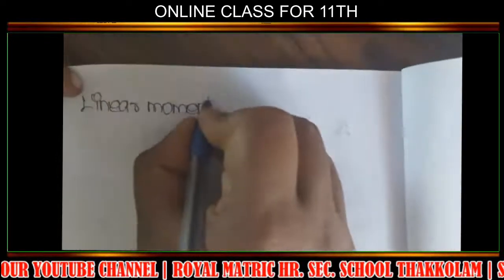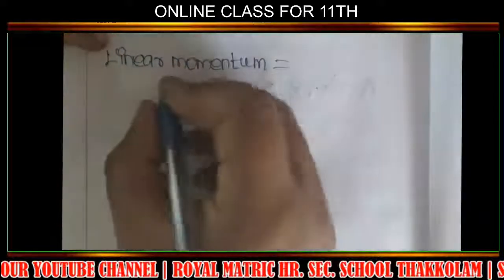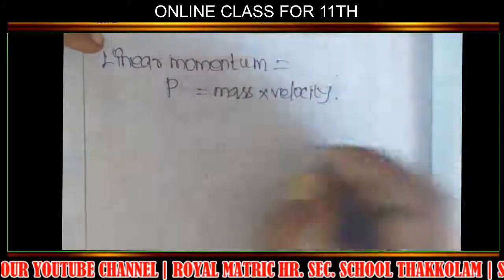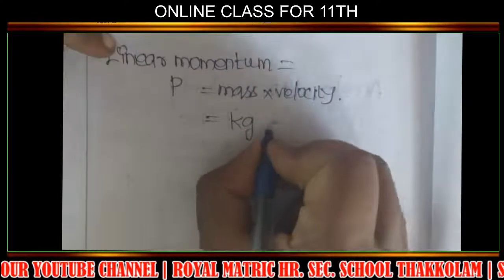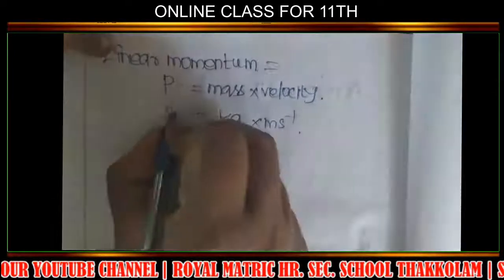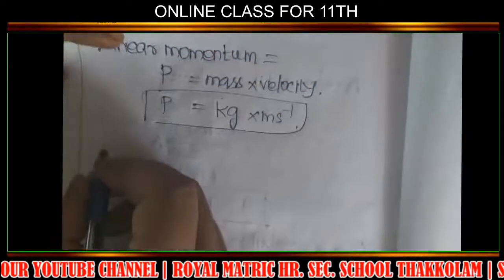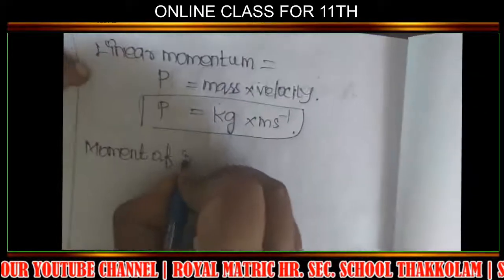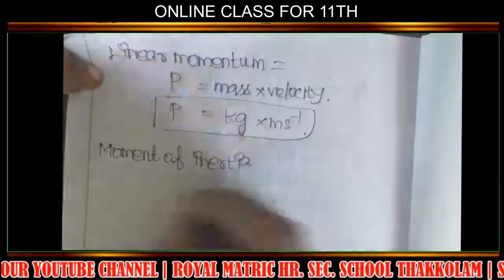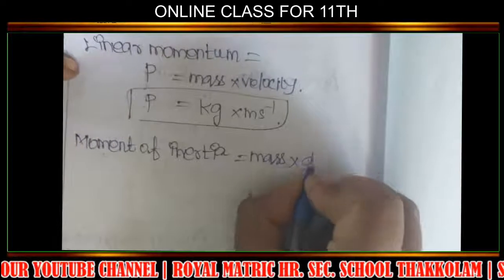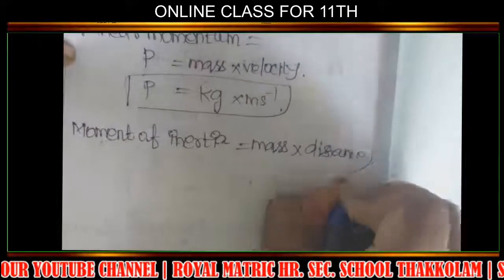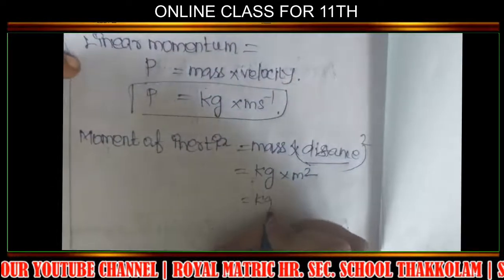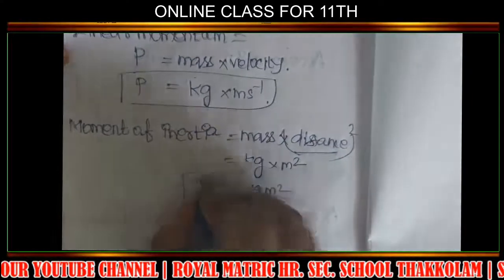Linear momentum, symbol p, formula is mass into velocity. Mass SI unit is kilogram, velocity is m s⁻¹, so momentum SI unit is kg m s⁻¹. Moment of inertia formula is mass into distance squared. SI unit is kg m².